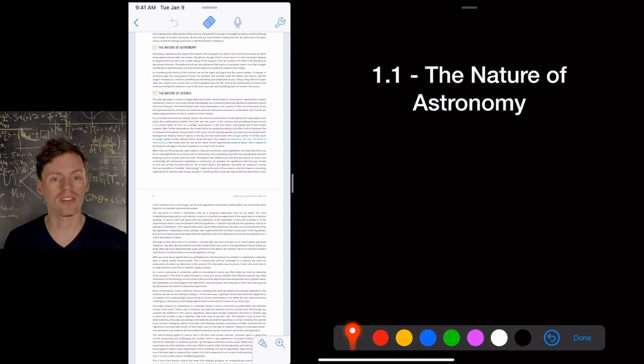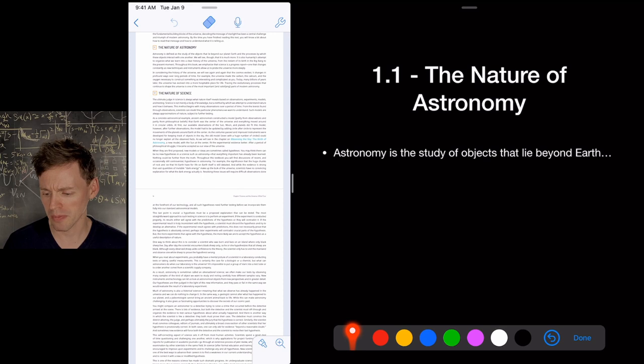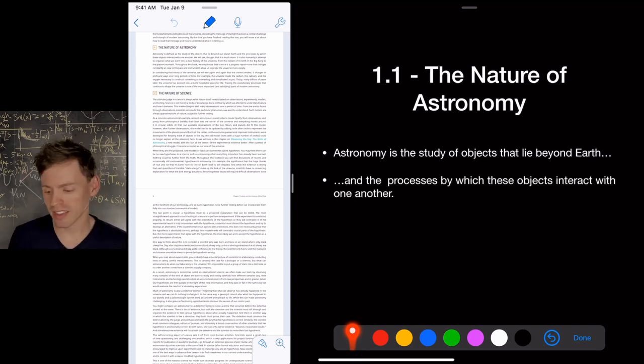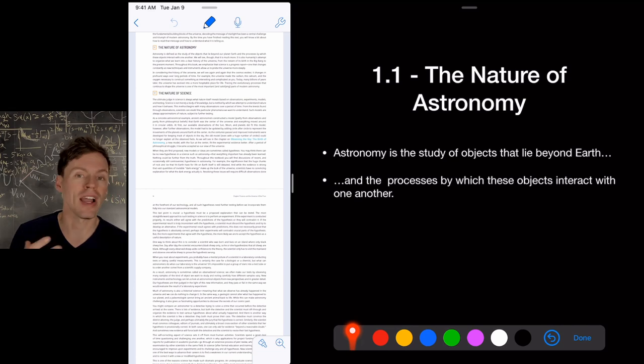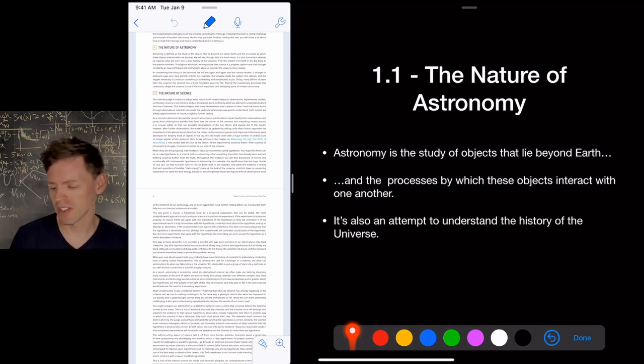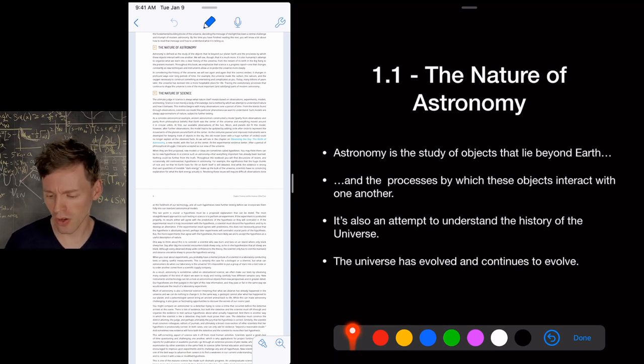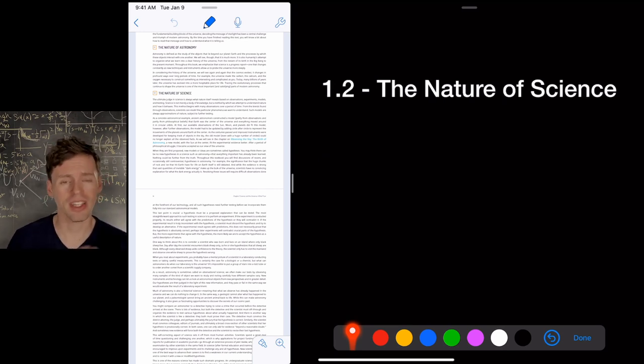Okay, so that's section 1.2. Let's talk about section 1.1 now, the nature of astronomy. So it goes into here in detail that astronomy is the study of objects that lie beyond Earth, and the processes by which these objects interact with each other. So astronomy is just we're looking out into the sky, into the universe, and we're trying to figure out what's going on. But it's also an attempt to study the history of the universe. The universe has evolved, and it continues to evolve, and we want to know those processes. Okay, that's just the general introduction of astronomy there.